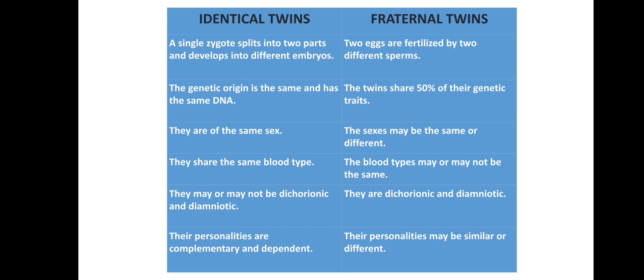There is a fetal membrane that exists during pregnancy between the developing fetus and the mother — it is a tissue connecting the baby and mother. In the case of identical twins, there are two chorions and amniotic fluid. In the case of fraternal twins, there are two chorionic sacs and two amniotic sacs — they are dichorionic and diamniotic.